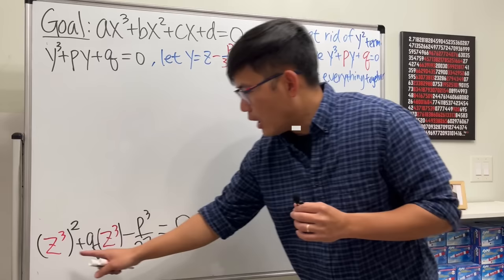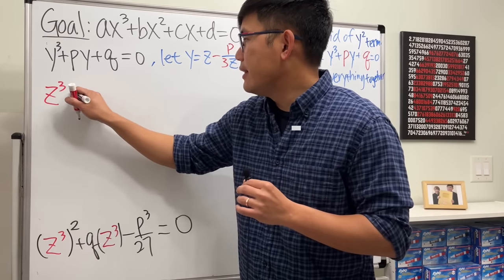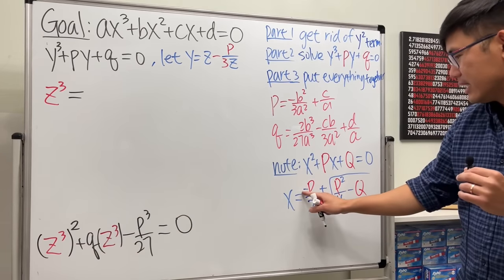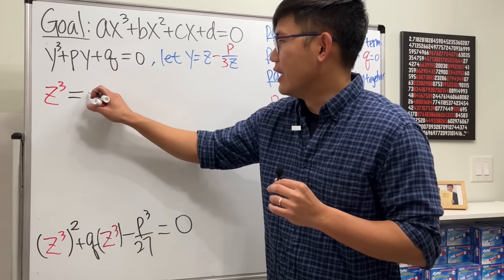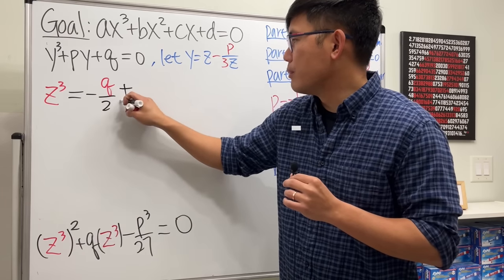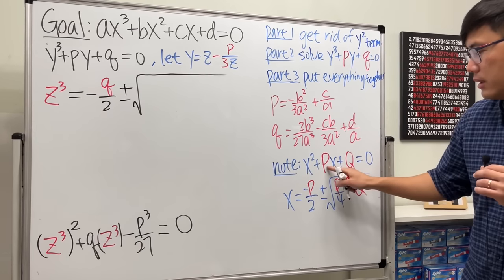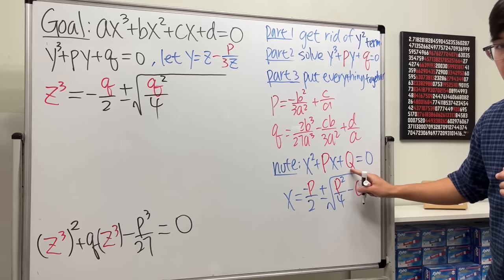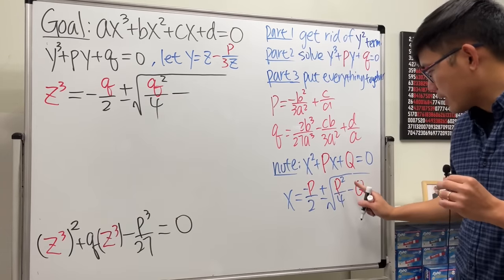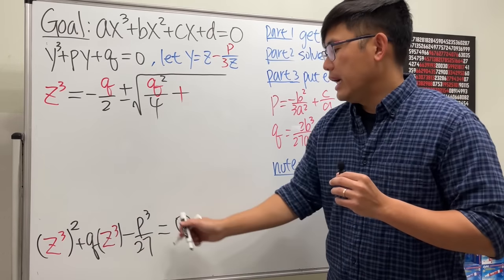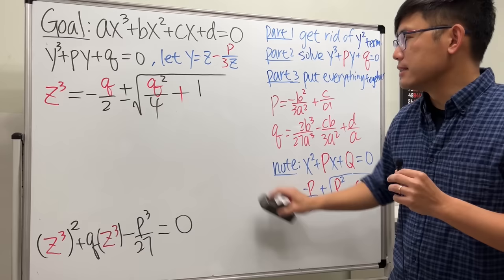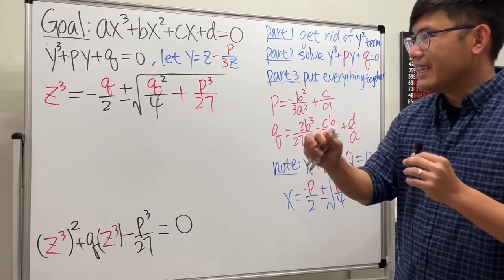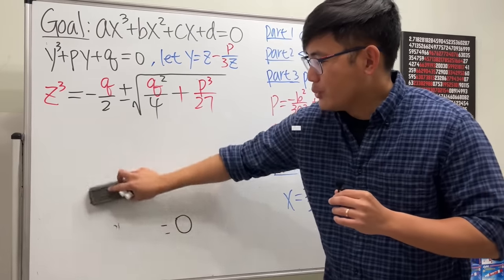We can now take the cube root on both sides. But here is the trouble: first, the ± gives two expressions, and each cube root should actually have three answers for the complex solutions. So it seems we might end up with six solutions — but this was just x³, so how can we end up with six different possibilities?